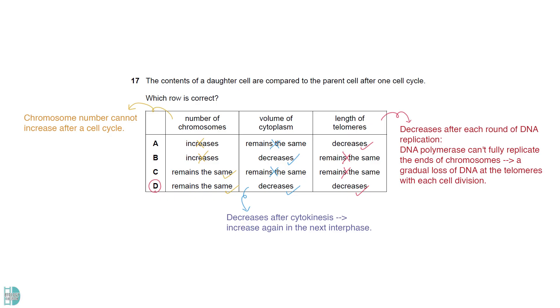The length of telomeres decreases after each round of DNA replication. The enzyme that copies DNA, DNA polymerase, can't fully replicate the very ends of chromosomes, leading to a gradual loss of DNA at the telomeres with each cell division.